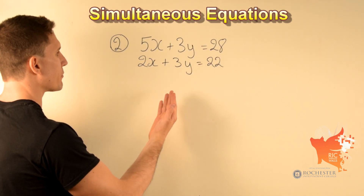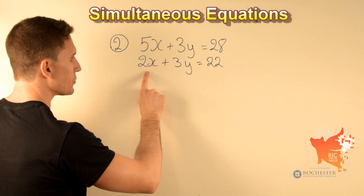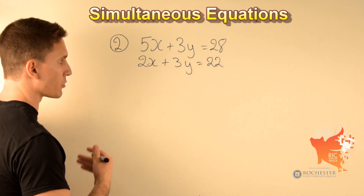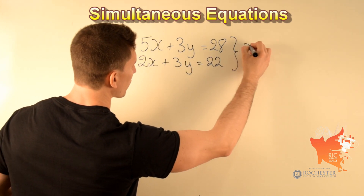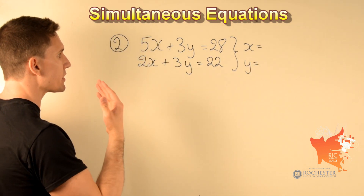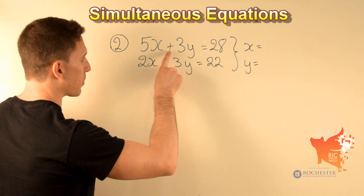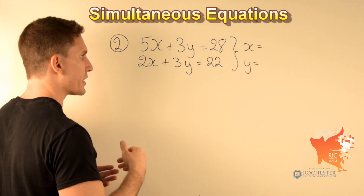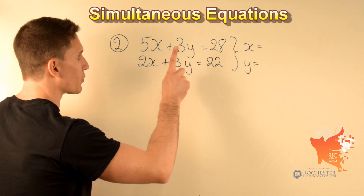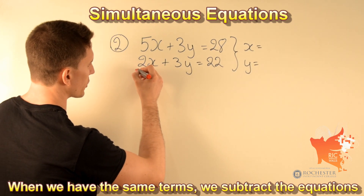In this second example we have been given the simultaneous equations 5x plus 3y equals 28 and 2x plus 3y equals 22. Solving these means finding the value of x and the value of y. Notice in this case we have plus 3y and plus 3y appearing in both equations, so we can eliminate this variable y in one step by subtracting the two equations by parts.